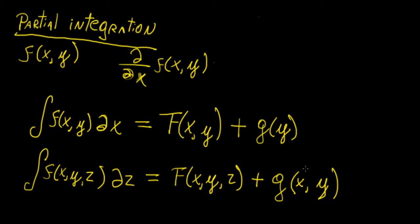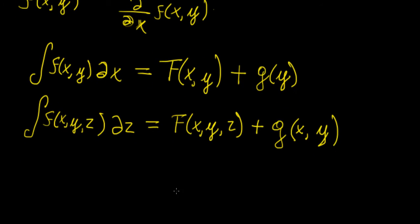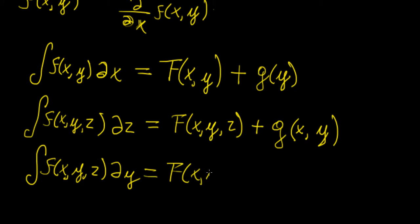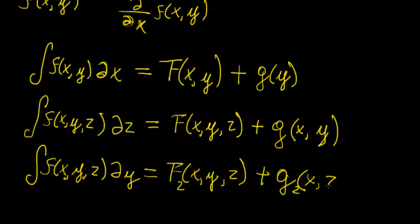So our constant of integration is now a function of x and y. The same process can be expanded to many other cases: for an n-dimensional function, we get a constant that involves n minus 1 dimensions. If instead we integrate the same three-variable function with respect to y, we get a different result, and the constant of integration is now a function of x and z — let's call it g₂(x, z).